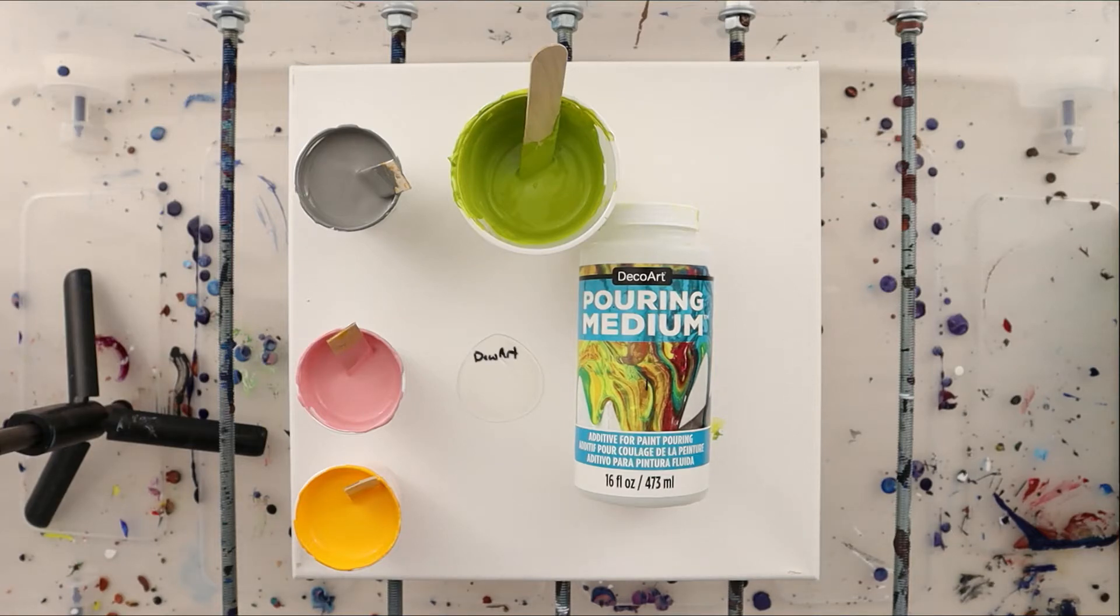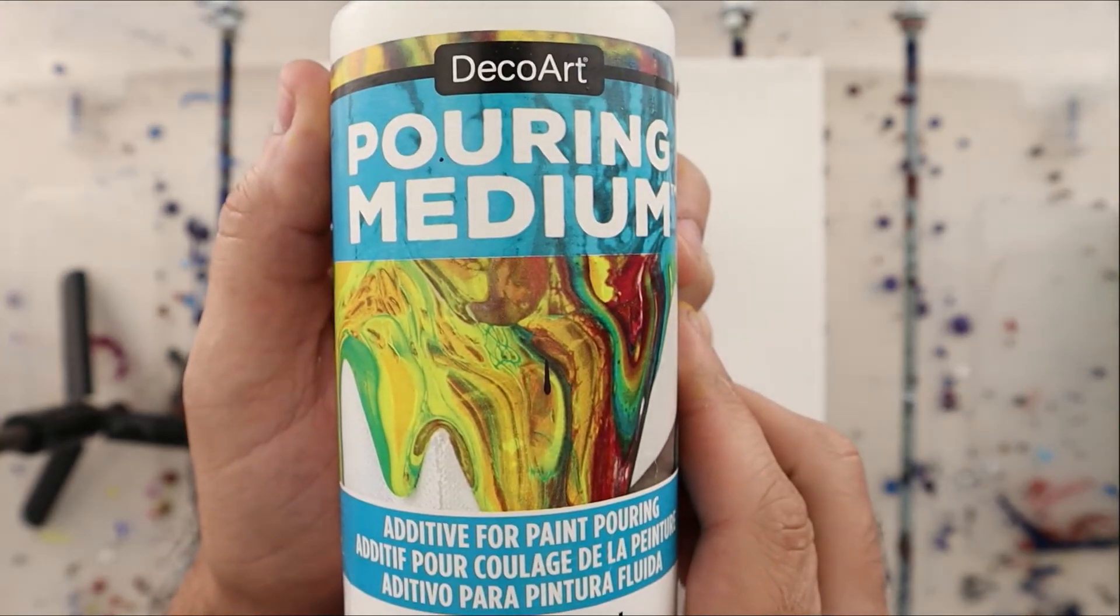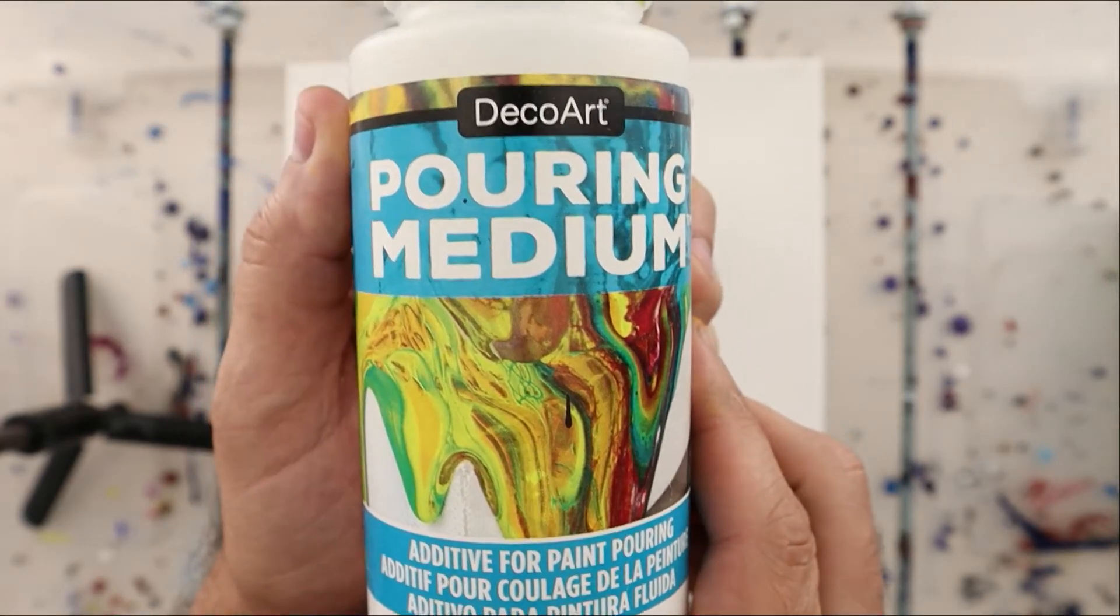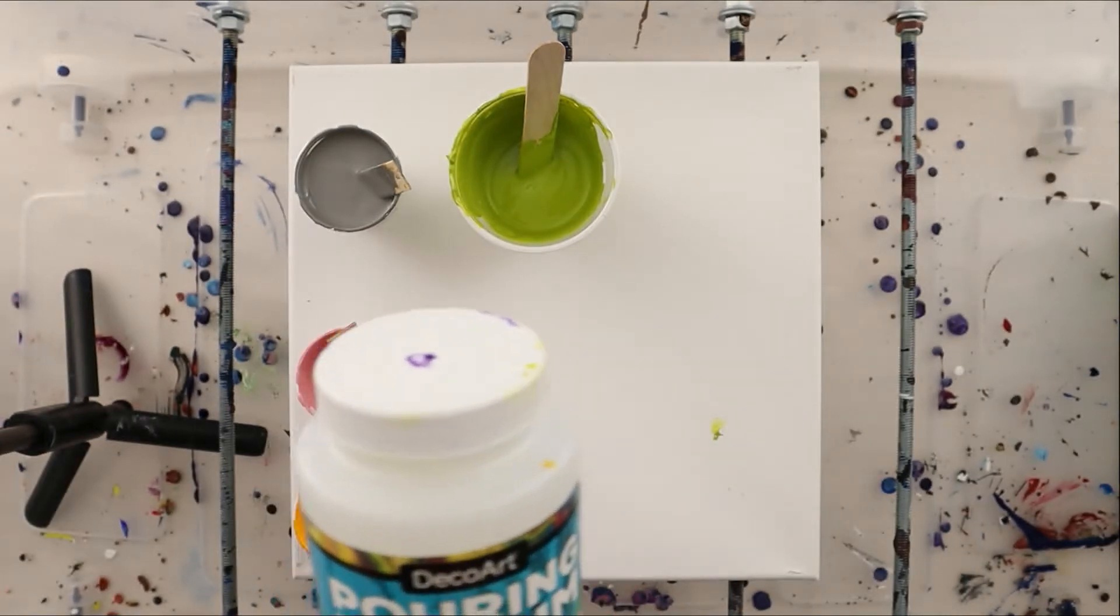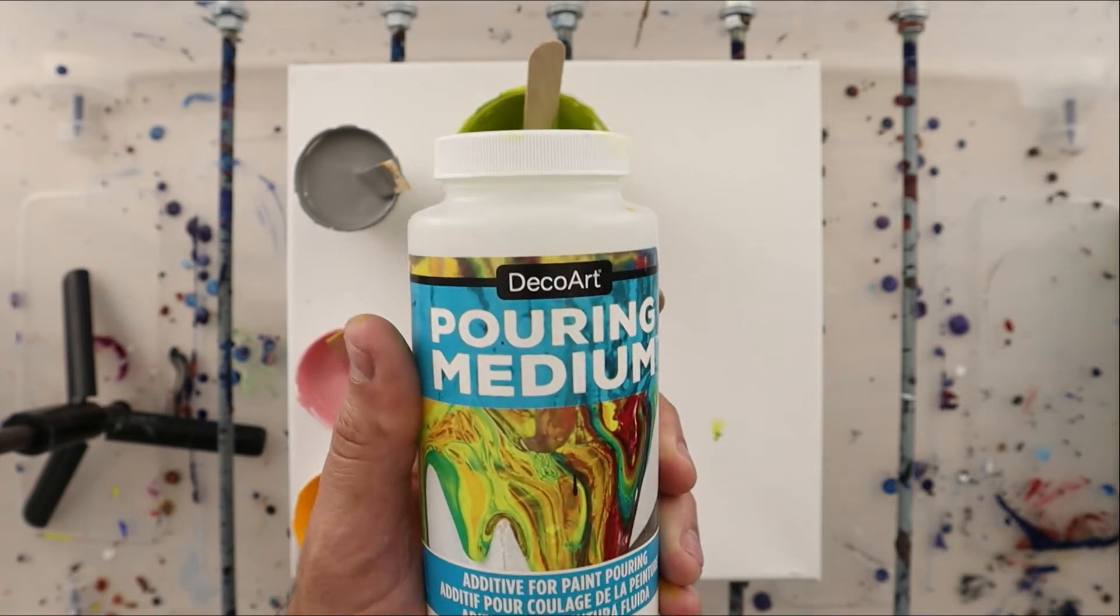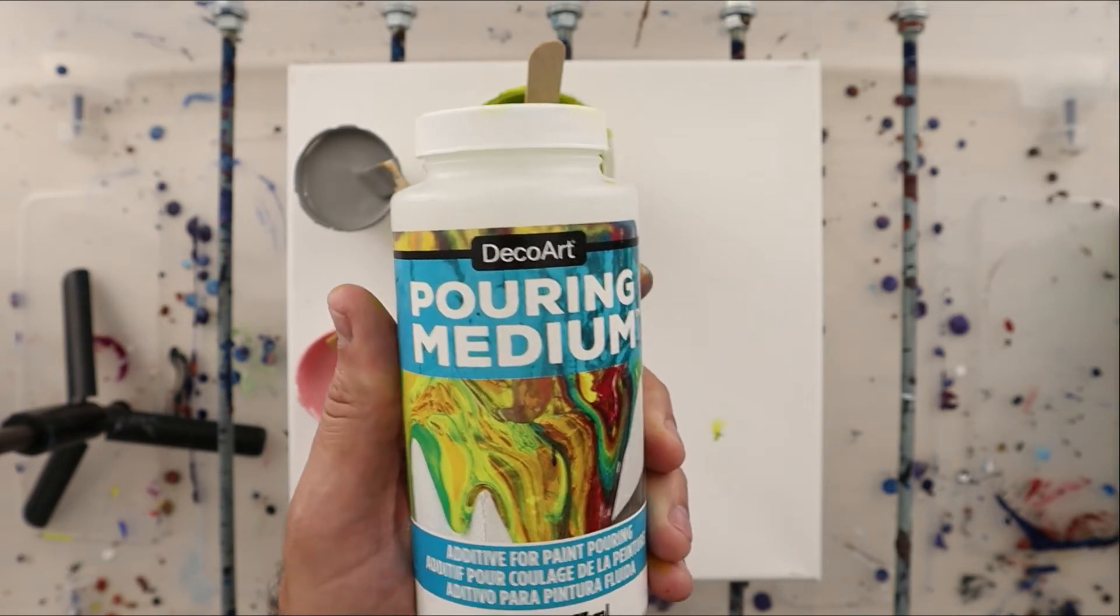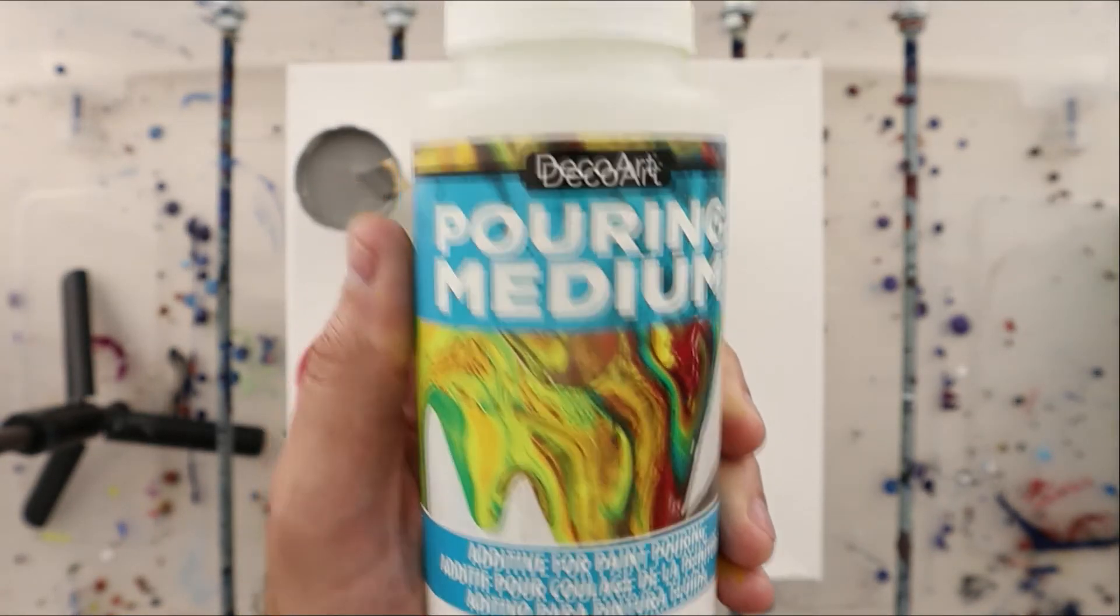Welcome back pouring nation. Today we are going to review the DecoArt pouring medium. This pouring medium runs about 63 cents per ounce when you buy it in the 16 ounce bottle. You can get it in a gallon and the price goes way down if you do that. So buy in bulk and you can get the price to go way down.